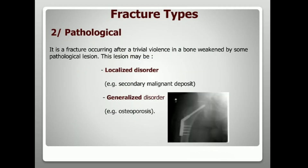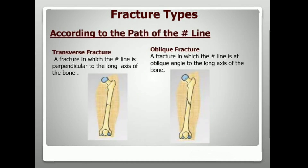The second type is pathological fracture, which occurs after trivial violence in a bone weakened by a pathological lesion. This lesion may be a localized disorder — such as secondary malignant deposit — or a generalized disorder such as osteoporosis.